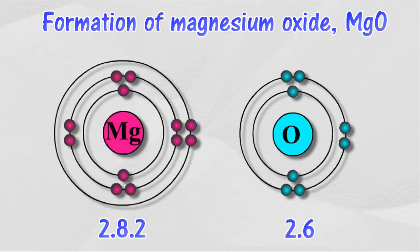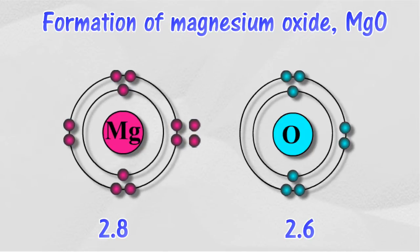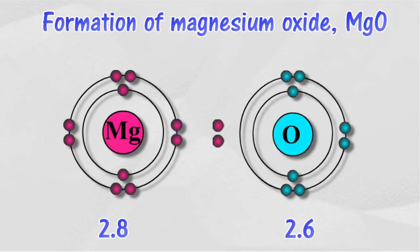Magnesium atom donates 2 electrons to form a positively charged magnesium ion. Magnesium ion achieves a stable electron arrangement of 2.8.